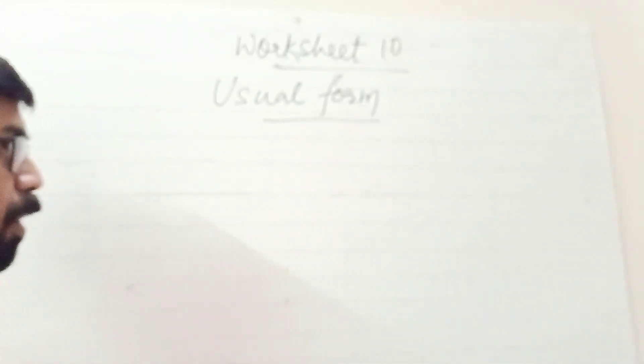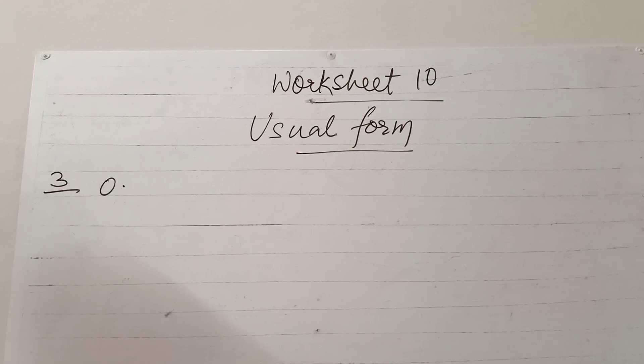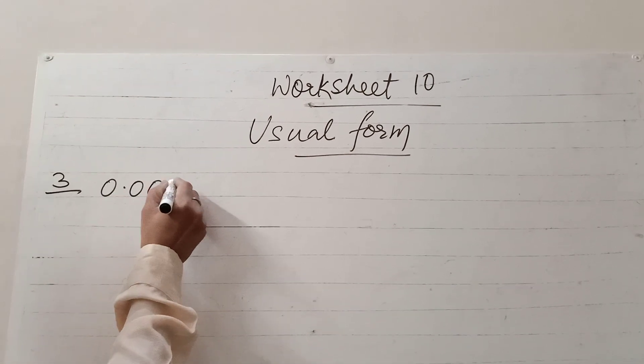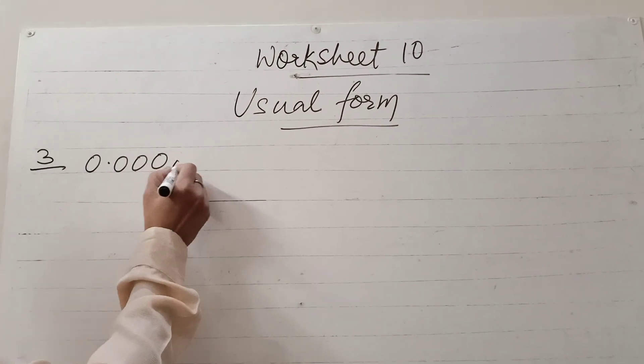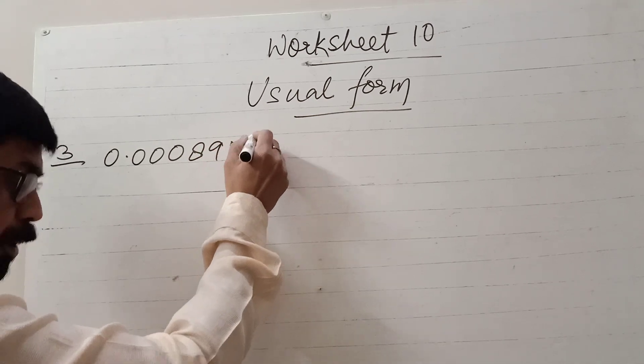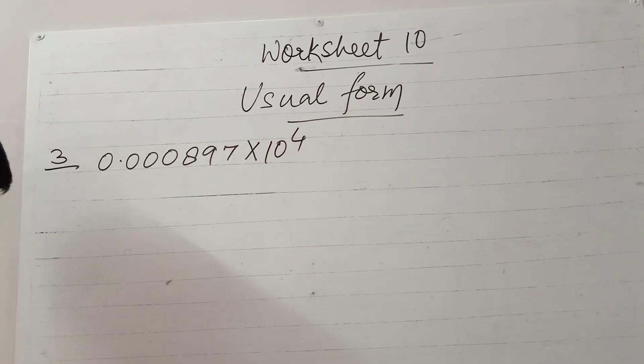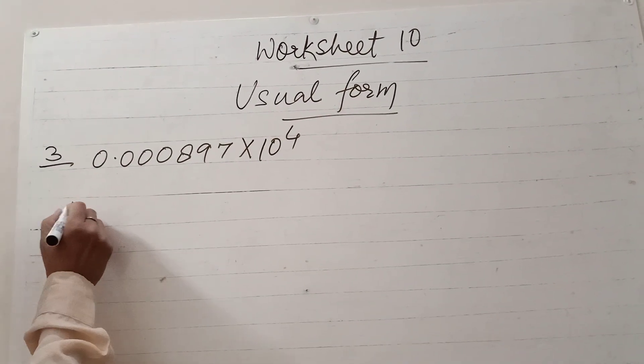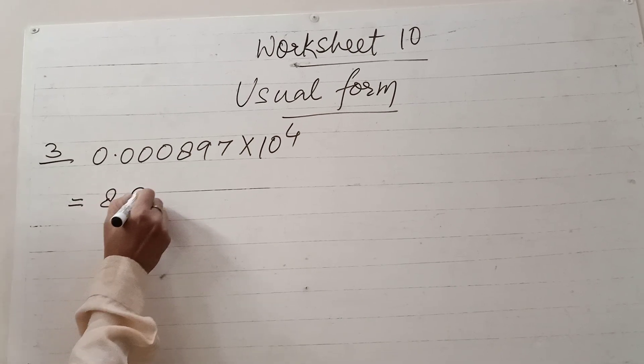For question number three: 0.008897 × 10^7. In this case, this can be written as 8.897. We are shifting one, two, three, four digits. Since we're shifting to the right side, it's minus four.